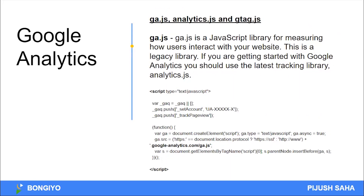Google Analytics is a code snippet which is placed on our website. There are different types of versions. The classic version is classic Google Analytics — ga.js. We can use Universal Analytics as well. In the upcoming era, Google Analytics 4 is the future.